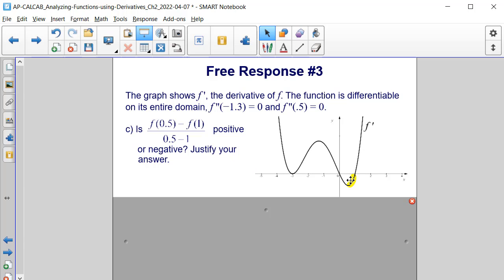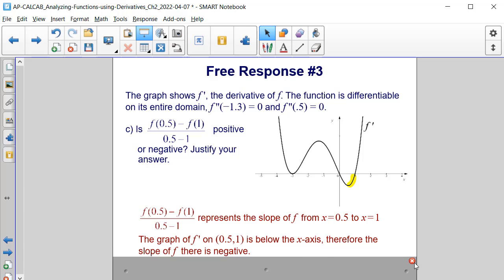Now, if we look at the function's derivative, within that interval from 1 half to 1, we have the derivative being below the x axis or being negative. And since the derivative is negative within that interval, so will the slope of the tangent lines and the slope of the secant lines be negative. So this represents the slope of our function from 1 half to 1, and the graph of f prime on this interval is below the x axis, so it's negative. Therefore, the slope of f will also be negative.